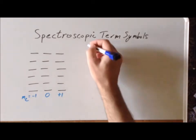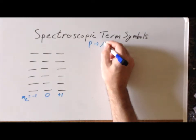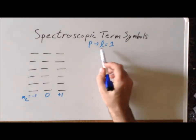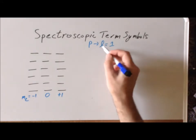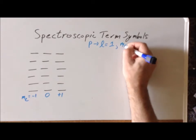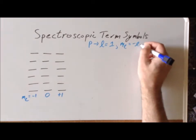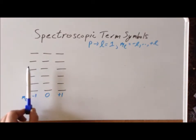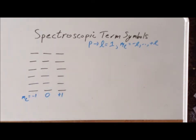The reason we do that is that p orbitals are consistent with an L value of one, and by the rules of quantum mechanics, the allowed values of M sub L go from minus L up to plus L. So for L equals one, the allowed values of M sub L are minus one, zero, and one. We systematically place M sub L equals minus one to the left, zero in the center, and positive one to the right.